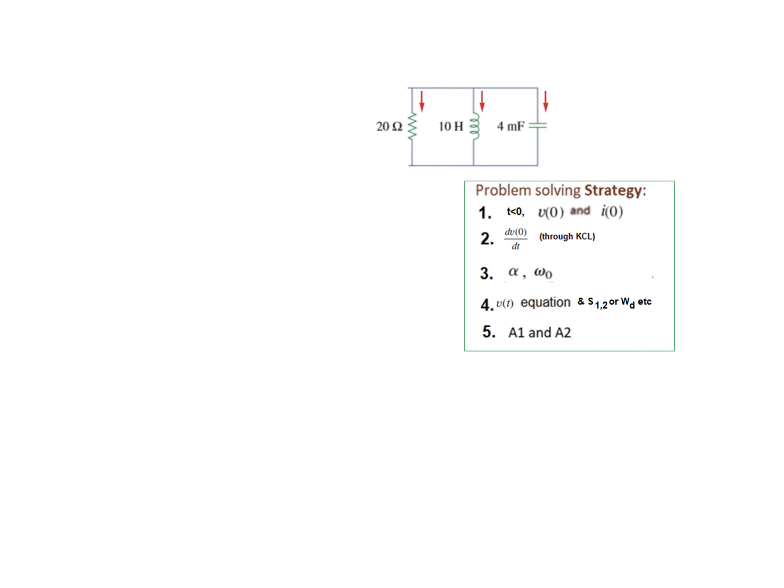Now we go to the test. We find alpha and omega. Plugging in the values, alpha comes to be 6.25 and omega comes to be 5. In this case alpha is greater than omega, so this is also an overdamped case.